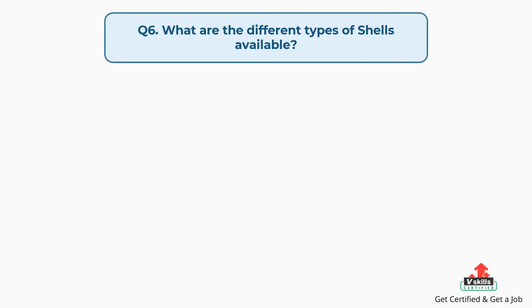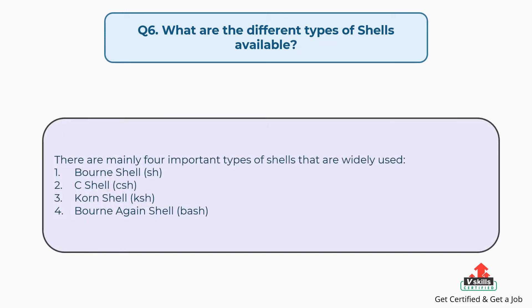Question number six: what are the different types of shells available? There are mainly four important types of shells that are widely used: first, Bourne shell; second, C shell; third, Korn shell; fourth, Bourne-Again shell.